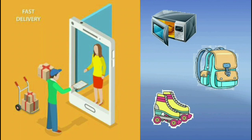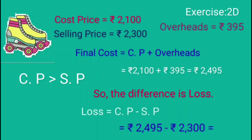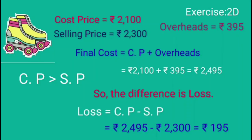Children, one day Farah ordered a microwave oven, a school bag, and roller skates online. Let us see the cost price, selling price, and overhead charges of these things and find out whether it is profit or loss to the seller. Farah ordered roller skates for her son Chintu. The cost price is 2,100 rupees, overheads are 395 rupees, and the selling price is 2,300 rupees. These are the sums from exercise 2D, third bit.